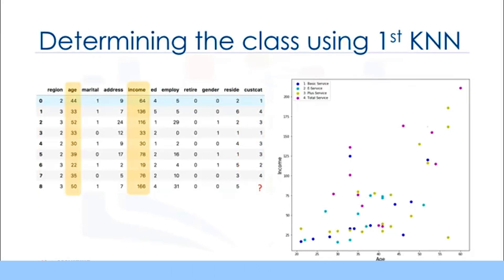Just for sake of demonstration, let's use only two fields as predictors, specifically age and income, and then plot the customers based on their group membership. Now, let's say that we have a new customer, for example, record number 8, with a known age and income. How can we find the class of this customer?